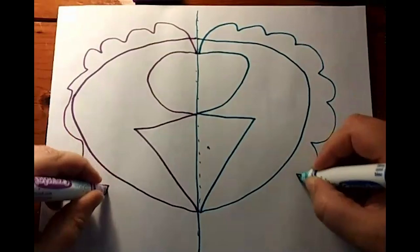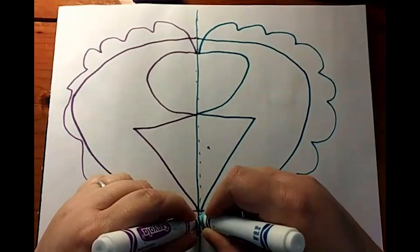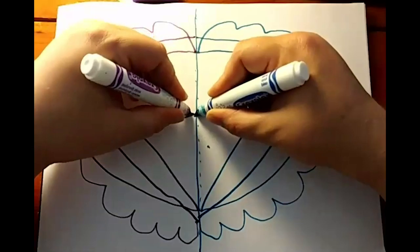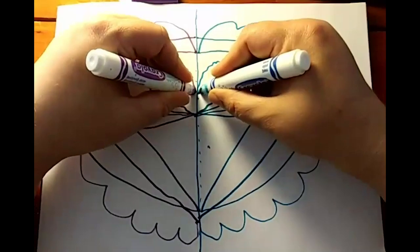By breathing while you draw, it helps calm your body. It makes you feel good. Get some oxygen in your brain so you can think better. And as you go out and back, whatever you're drawing is going to be symmetrical. That means it's the same on both sides. It'll feel really balanced.